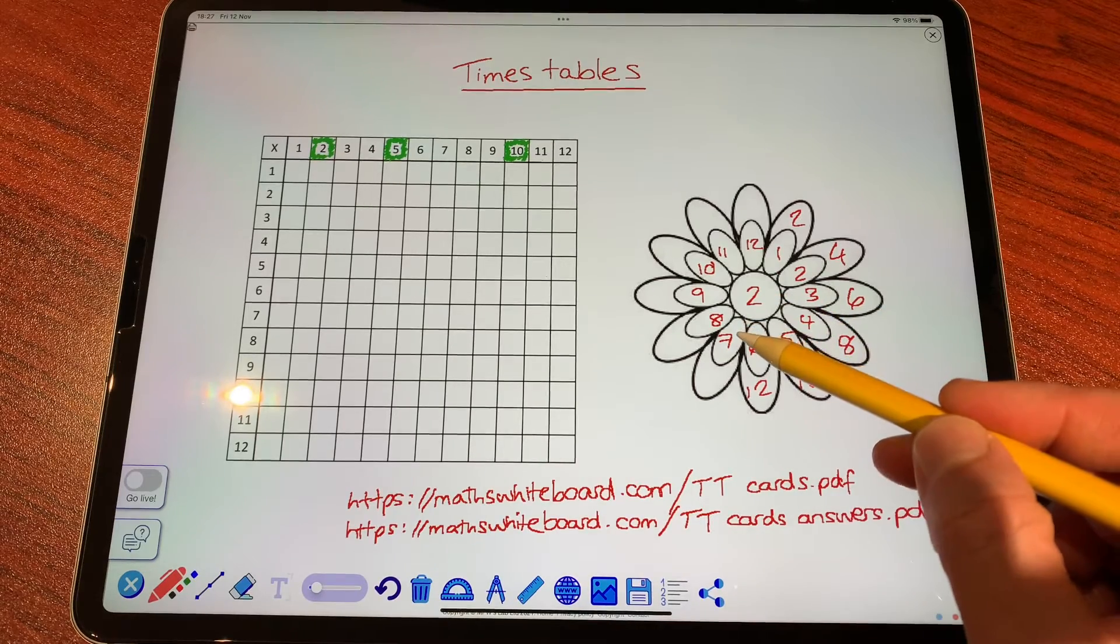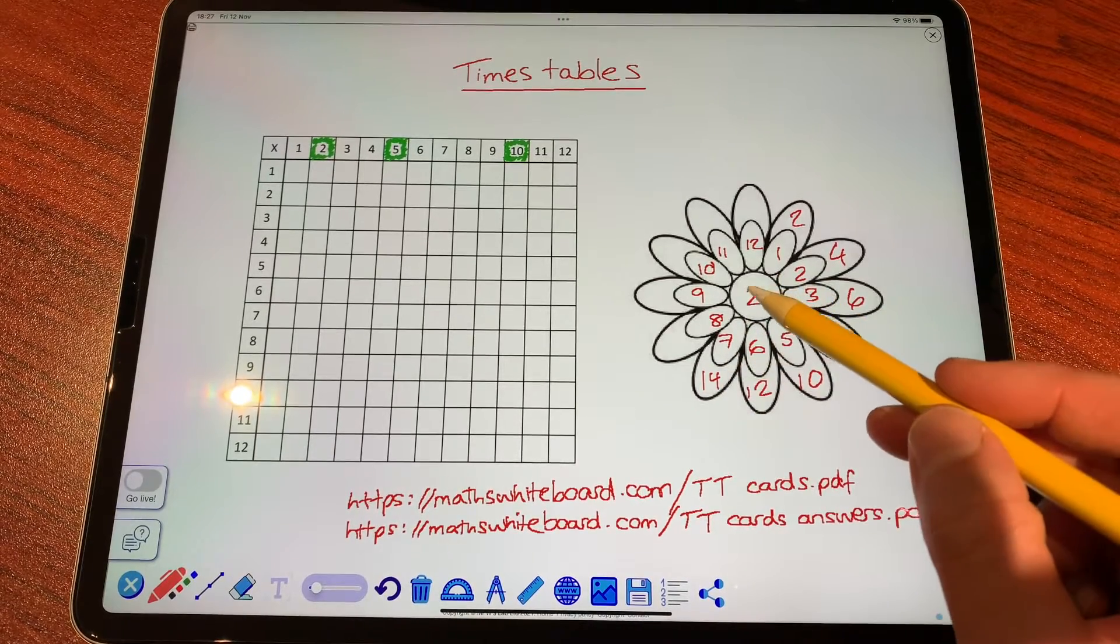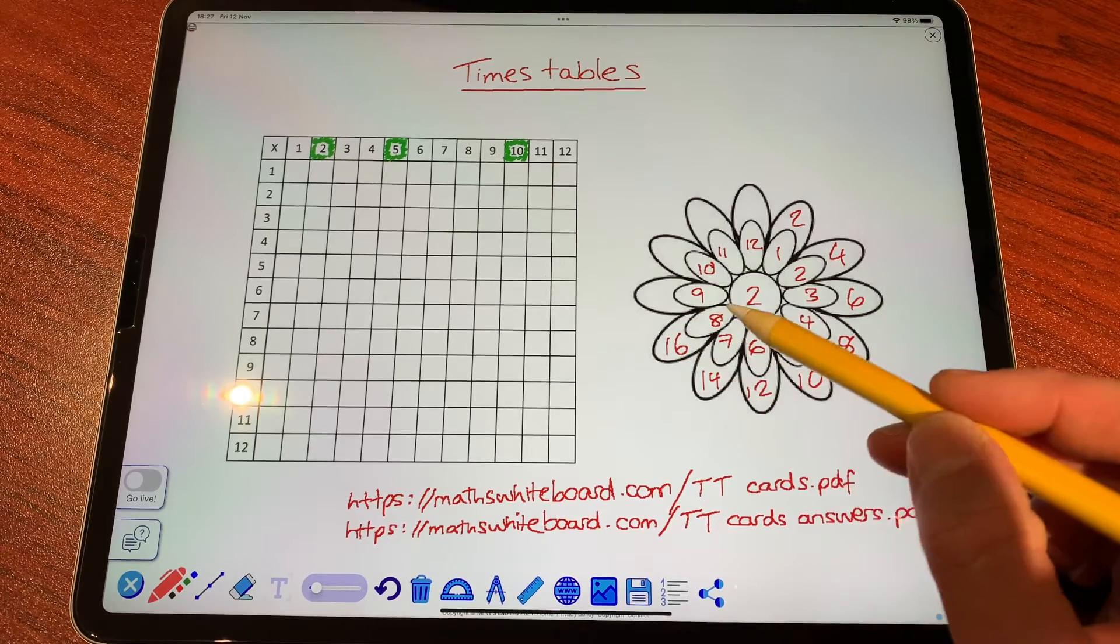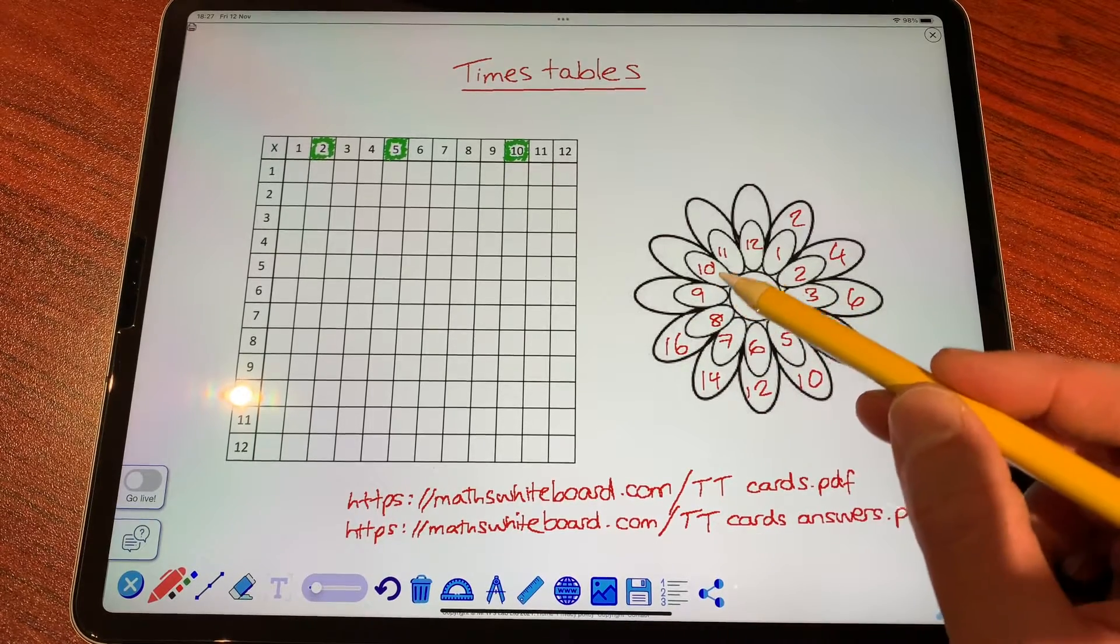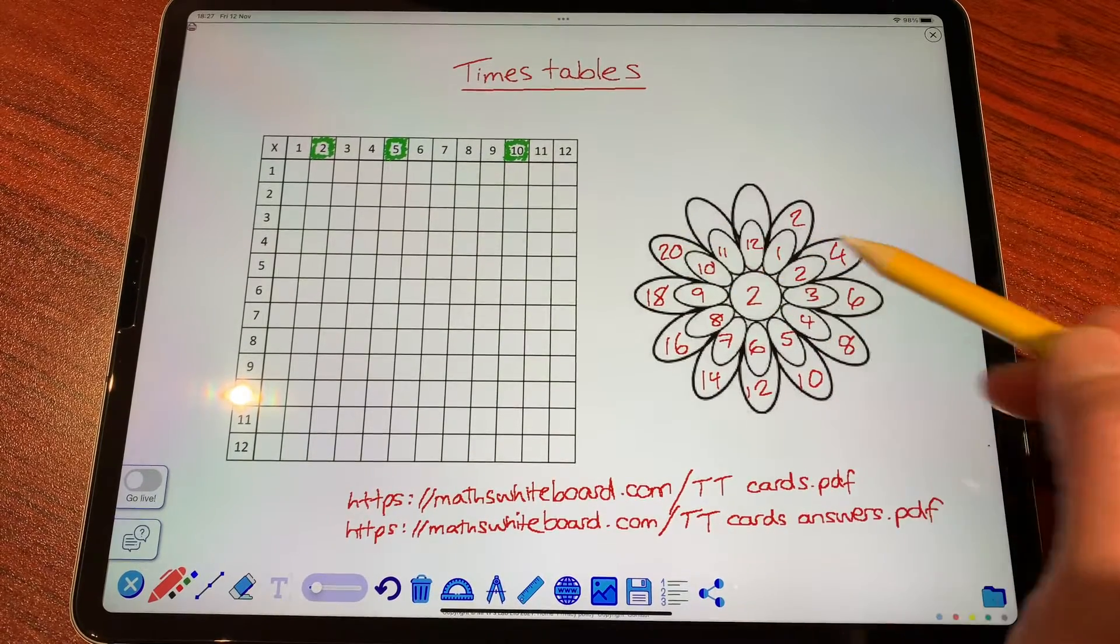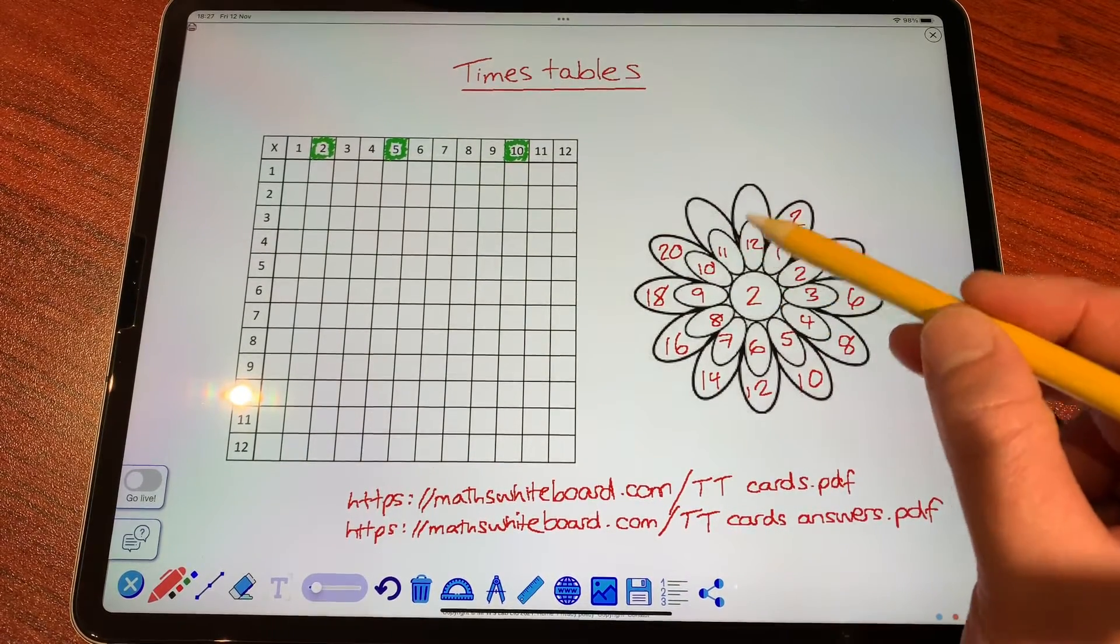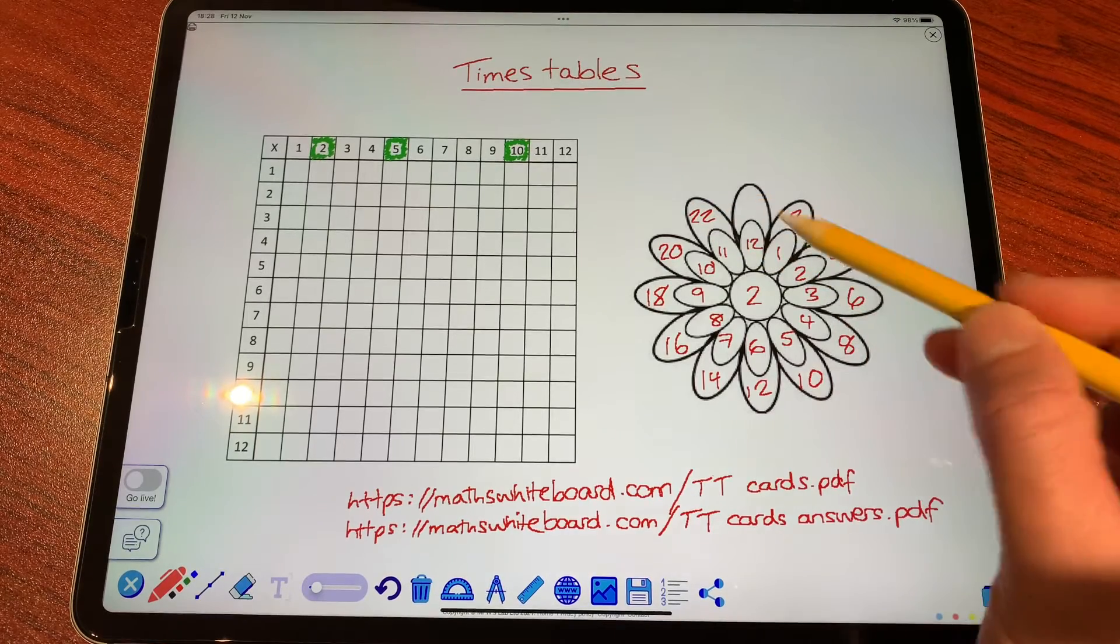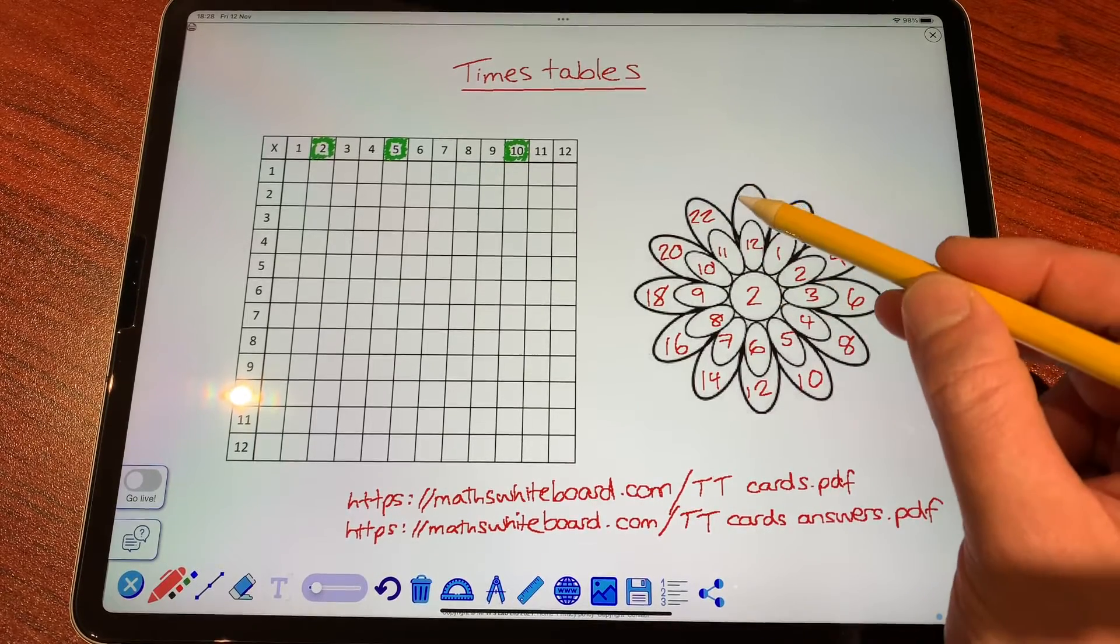2 times 7 is 14, 2 times 8 is 16, 2 times 9 is 18, 2 times 10 is 20, 2 times 11 is 22, 2 times 12 is 24.